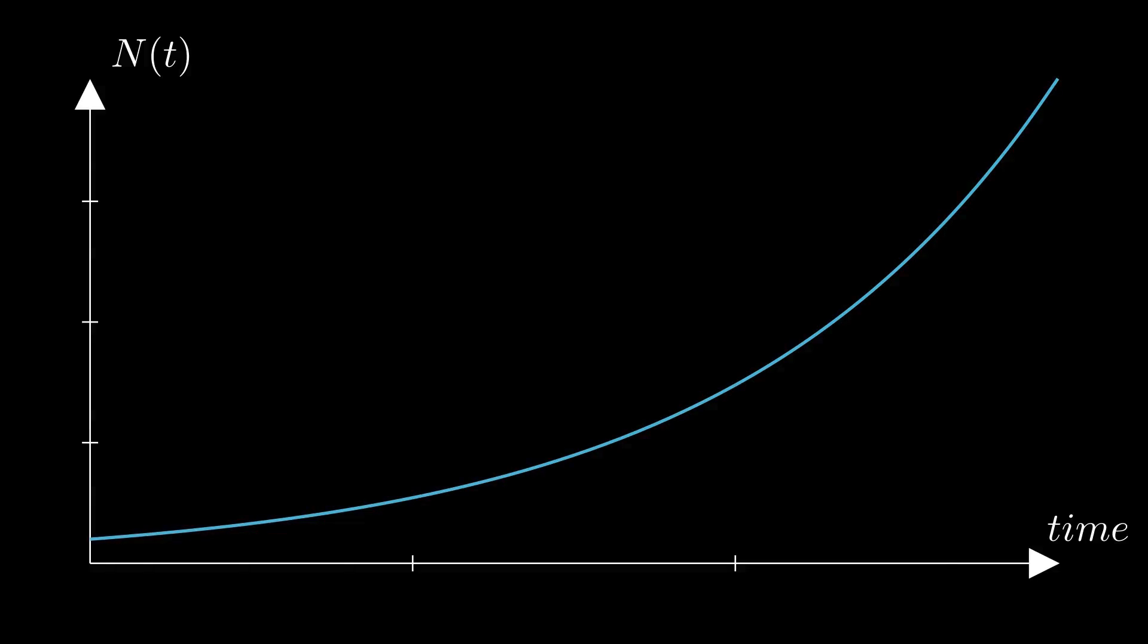What if bacteria didn't wait for the whole hour to double? Instead of one big doubling, let's assume they grow in smaller steps. This means the population is growing smoothly rather than in discrete jumps. Let's say that every half hour, instead of doubling, they grow by a smaller fraction.